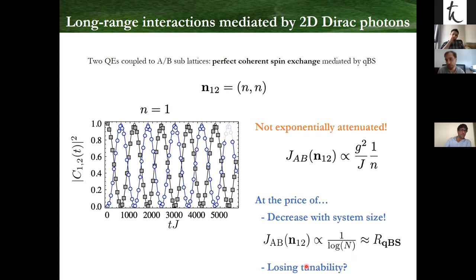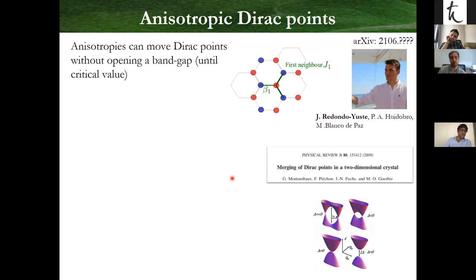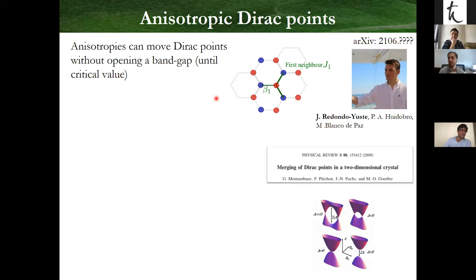Another price is whether you lose tunability — before you could control the range of the interaction by tuning the frequency, but now you don't have this. However, it is known that if you have an anisotropic Dirac point — say a bipartite lattice with a weaker or stronger hopping link — the Dirac points can move within the Brillouin zone, and are only annihilated when two of them with opposite winding numbers merge. Each Dirac point has a winding number of plus or minus sign, so the overall number is trivial.